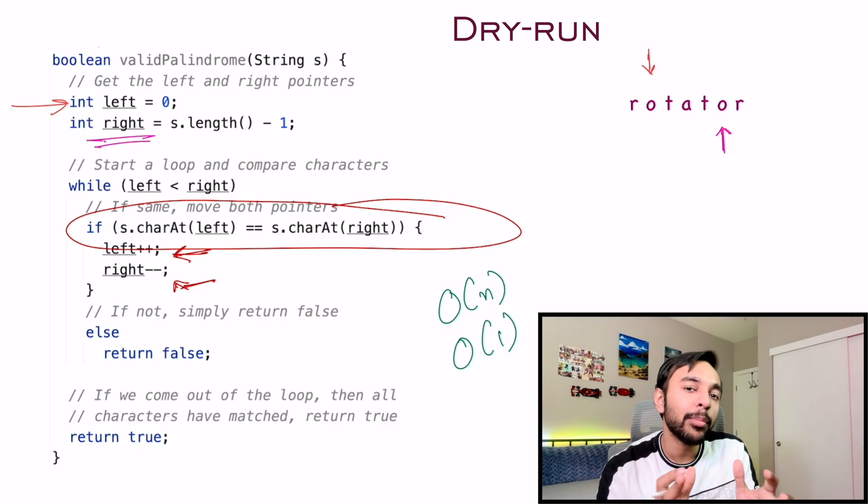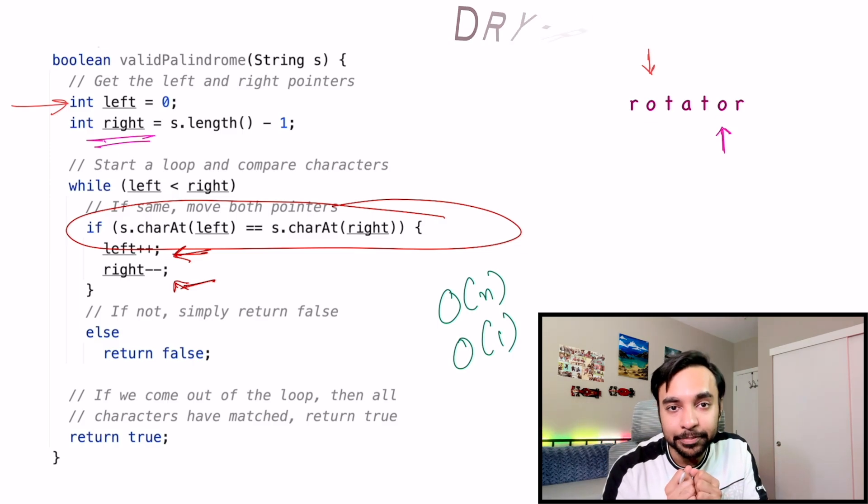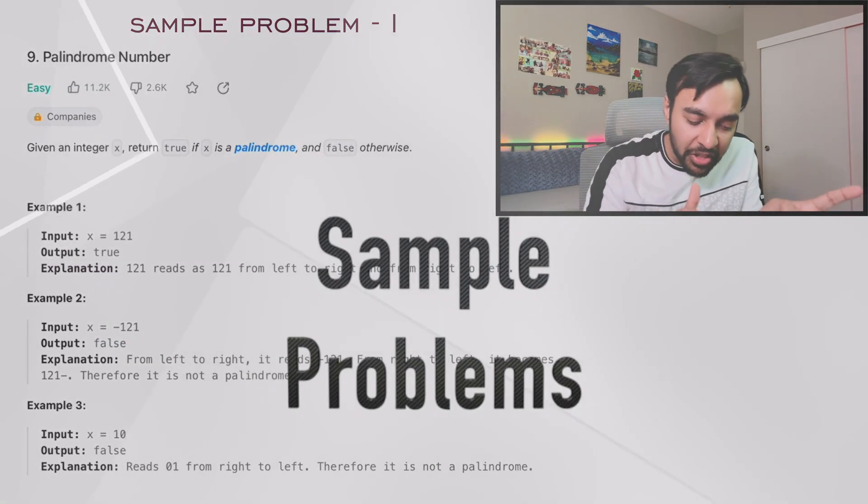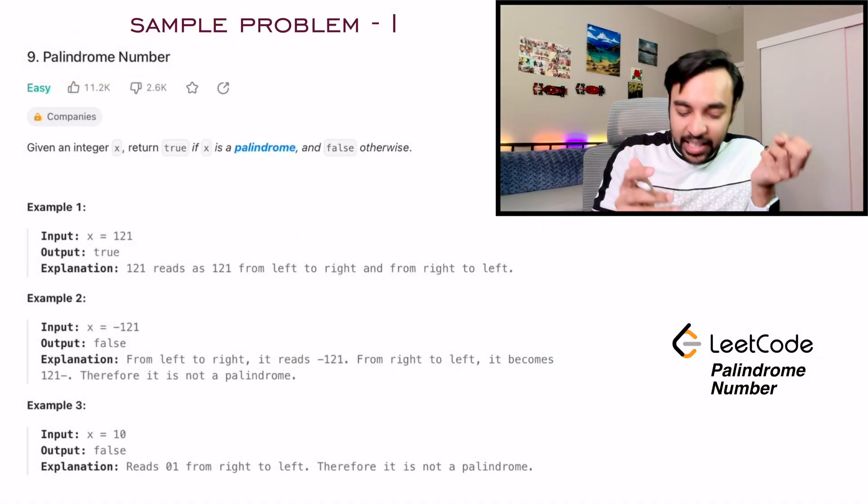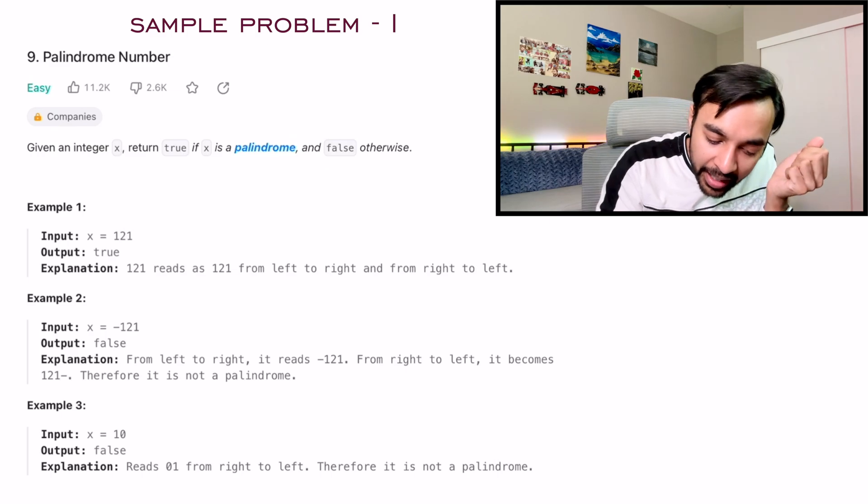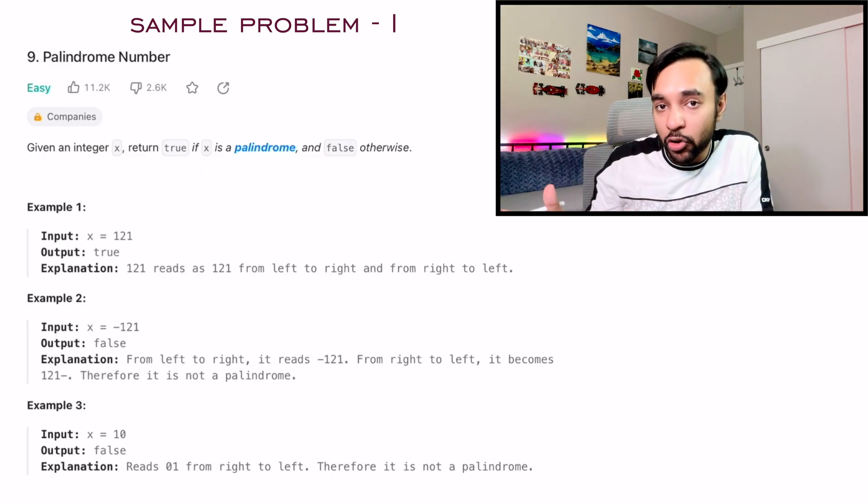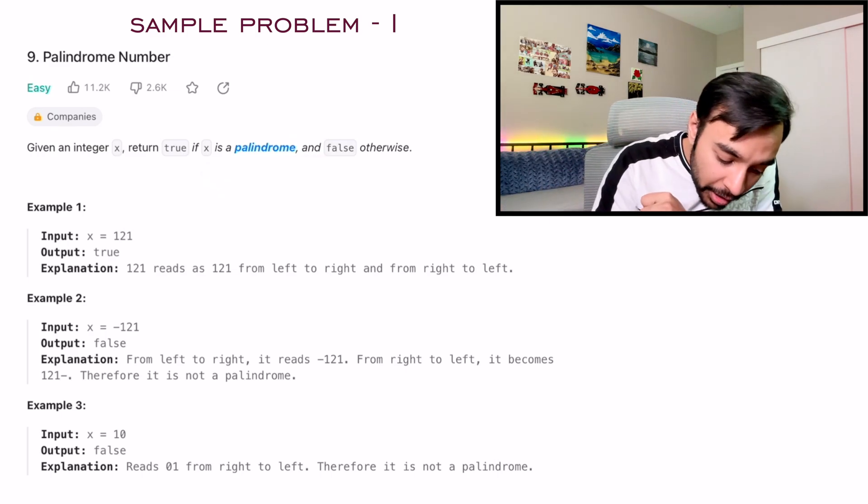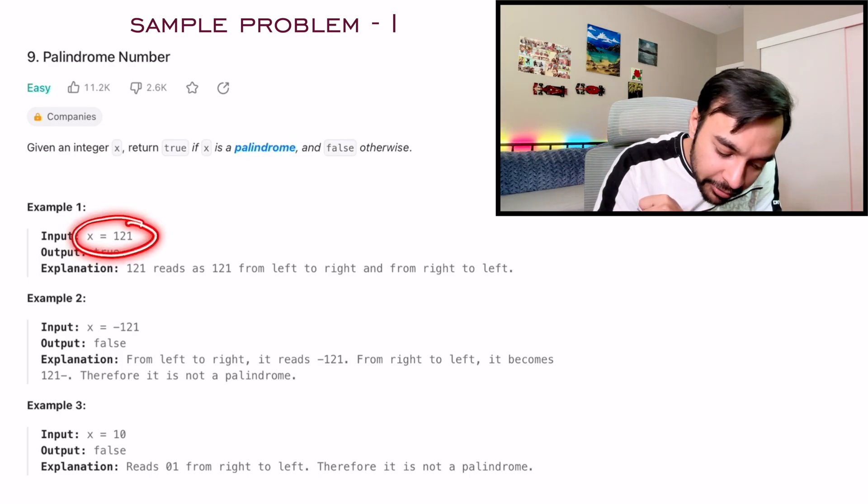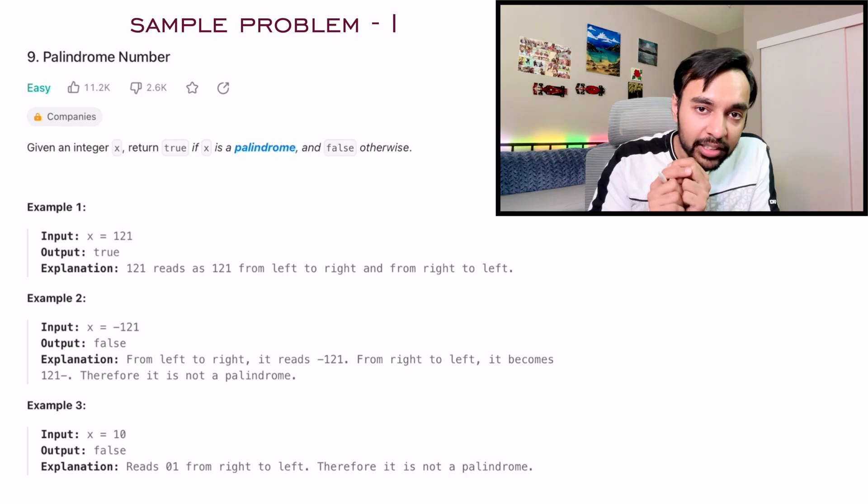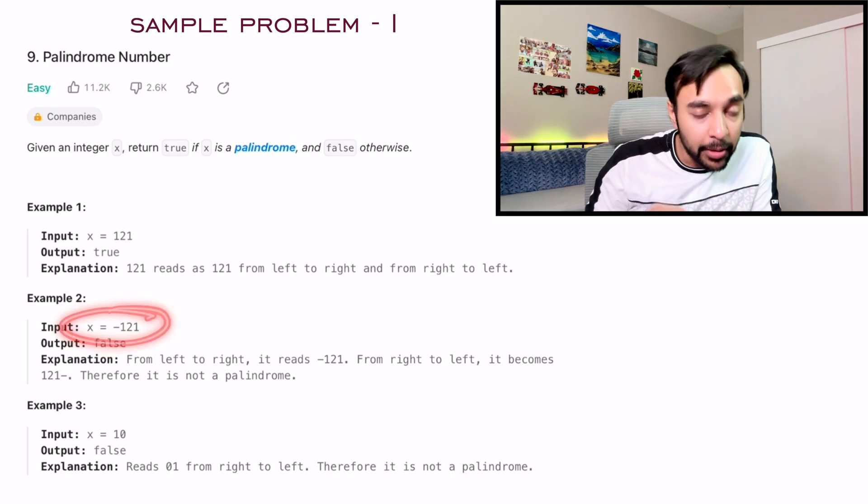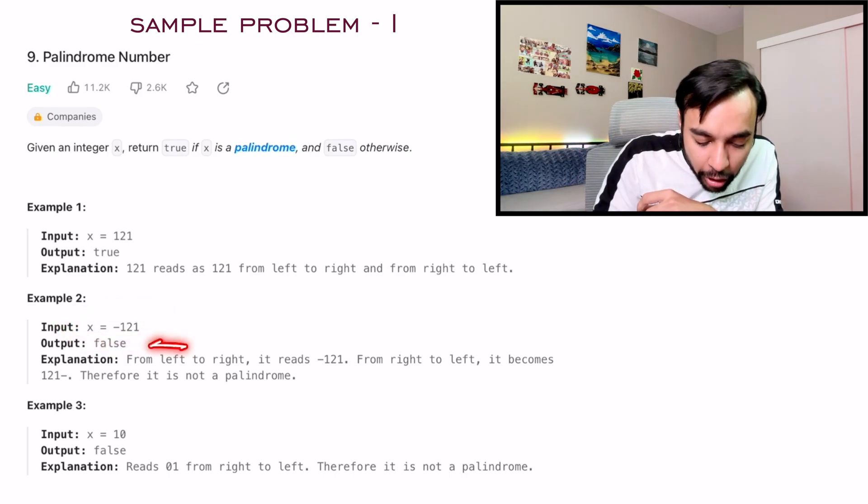Let us look at some of the sample problems that can be solved using this algorithm. For example, I have this problem on LeetCode, palindrome number. So basically, you are given a number and you have to determine if it is a palindrome or not. So if you look at the test cases, one is 121, this is a palindrome, so you return a true. Look at the other number. This is minus 121 and this is false. Why?